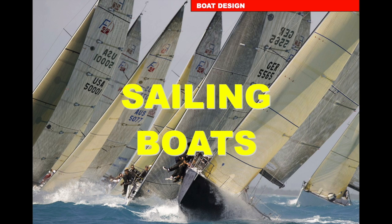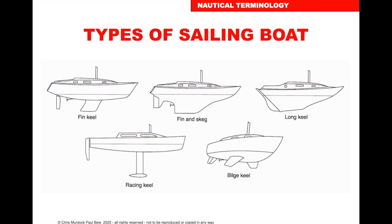First we'll look at sailing vessels and the different types. Starting at the top left there's the fin keel, next one has a fin and a skeg, then a long keel which is more traditional where the whole bottom of the boat is the keel. Bottom left is a racing keel with a very thin keel and a big bulb of lead at the bottom, and bottom right is a bilge keel.